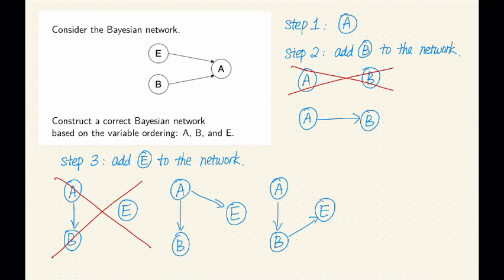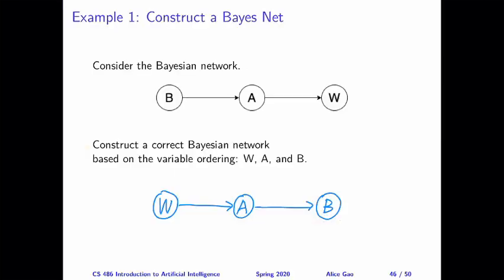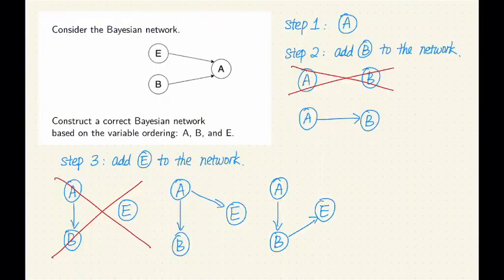If we want to choose A to be the only parent for E, then we have to verify that E is independent of B given A. Is this the case? Well, for this network, one key property that I discussed is that given A, B and E become dependent, right? So they actually become related to each other if A is observed. This is the explaining away effect.